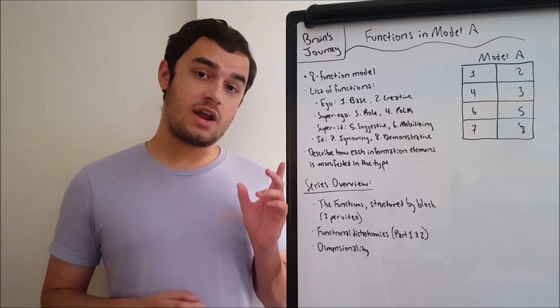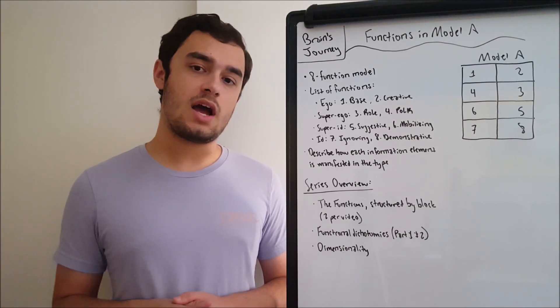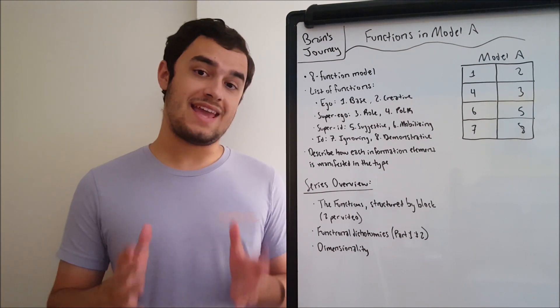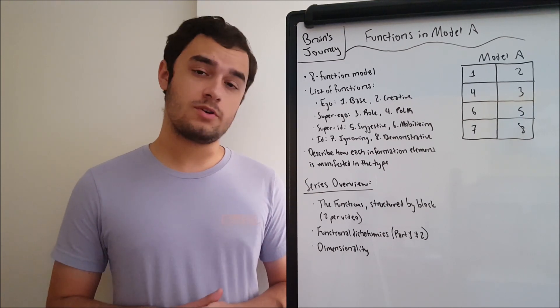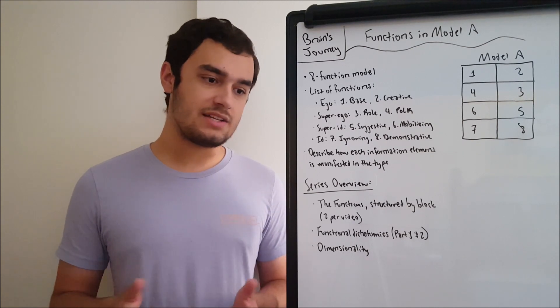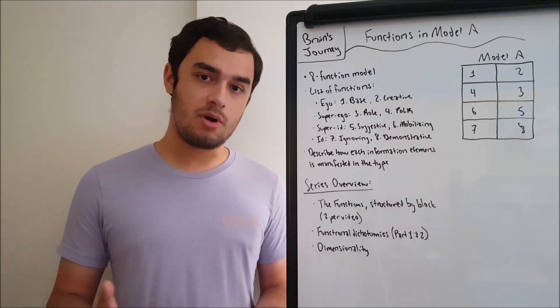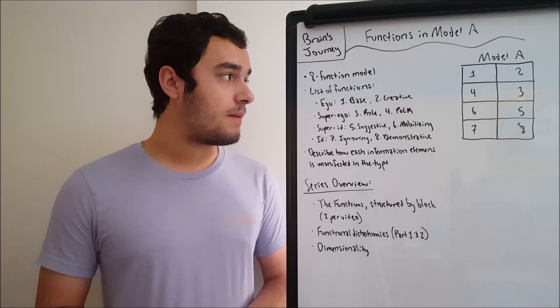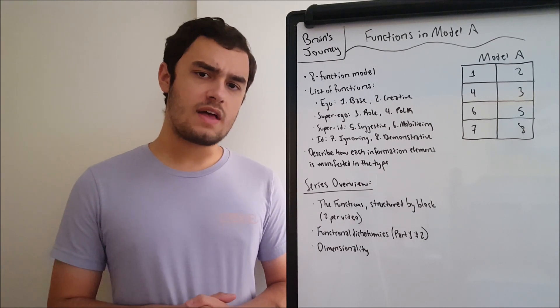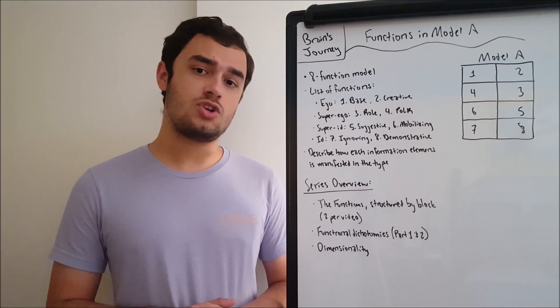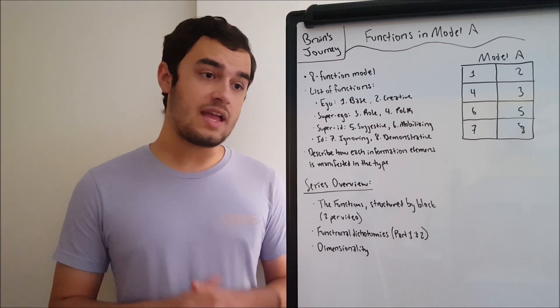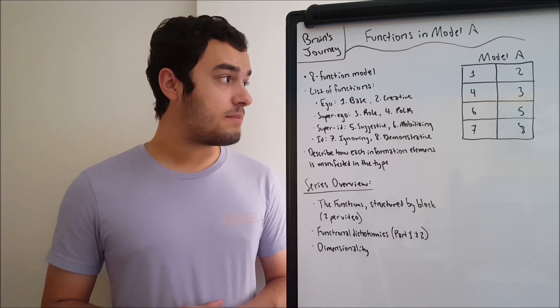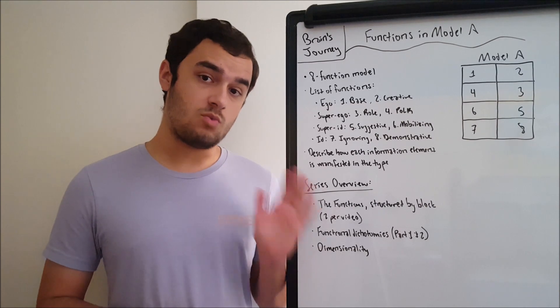First thing you'll notice right away, for those who come from MBTI and Western typology theories, is that Model A is an eight-function model, unlike the four-function models like the Myers-Briggs and a lot of the internet typologies that we look at. There are a few eight-function models out there in Western typologies, such as John Beebe's or Talking with Famous People, but Socionics has an eight-function model as well.